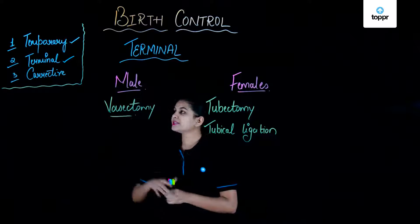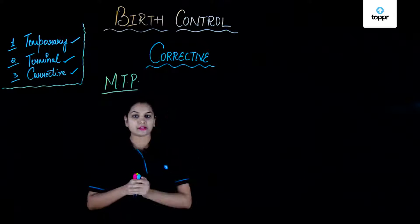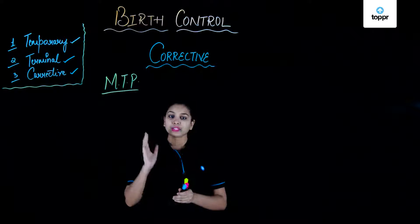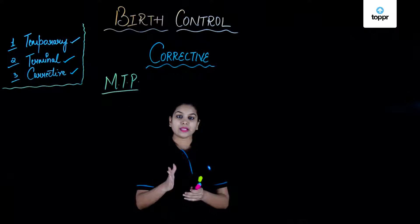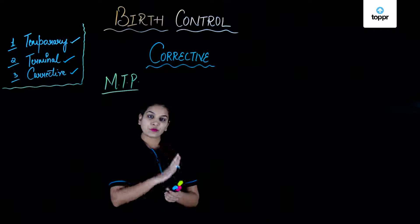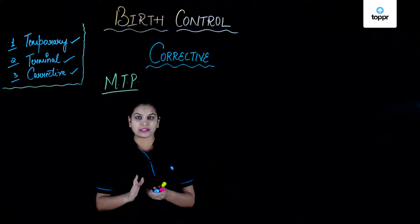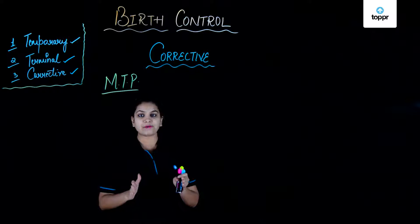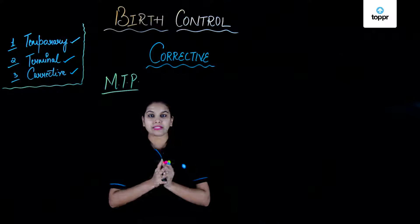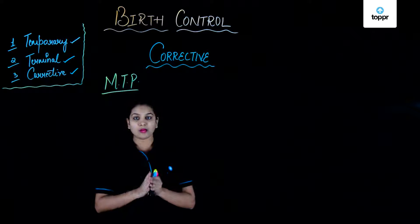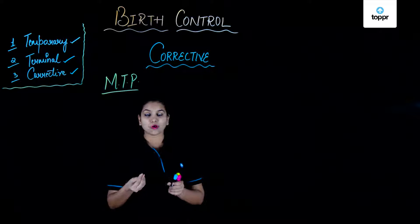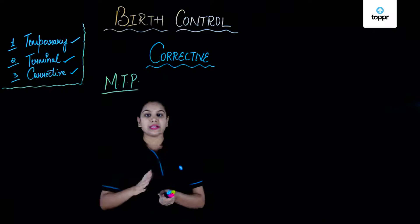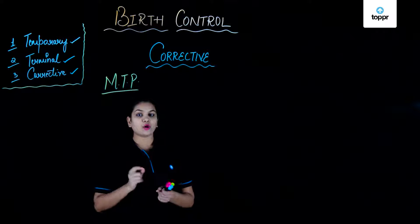The third method is the corrective method. Here we learn about MTP — medically terminated pregnancy — which is the medical termination of pregnancy when the fetus is not yet viable. Termination before the fetus becomes viable is legal in India. It is also called abortion. The first trimester is considered safe for abortion while the second trimester is considered more dangerous. Almost one-fifth of pregnancies worldwide are terminated medically. In India, MTP has been legalized since 1971 under a strict list of conditions.